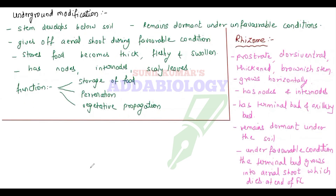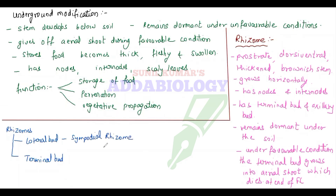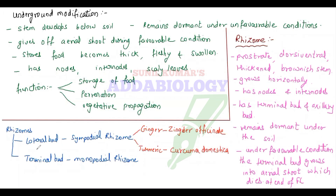At that time the stem still survives in the soil. Rhizomes have two buds — lateral bud and terminal bud. Lateral bud rhizome is sympodial rhizome, giving rise to ginger (Zingiber officinale) or turmeric (Curcuma domestica). Even canna and bamboo. Terminal bud is called monopodial rhizome — example lotus, Pteris, or Nymphaea.